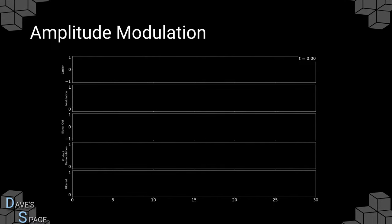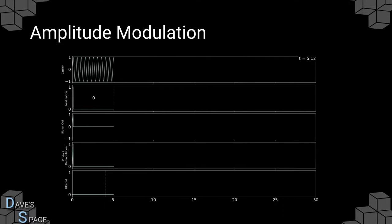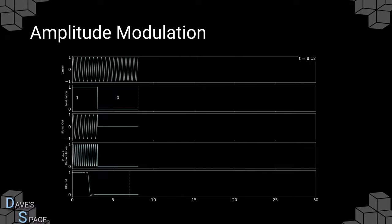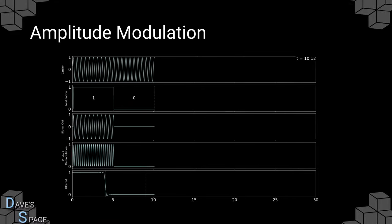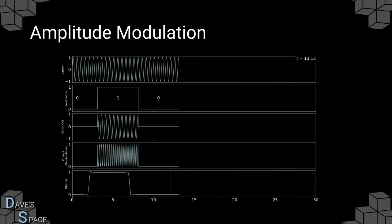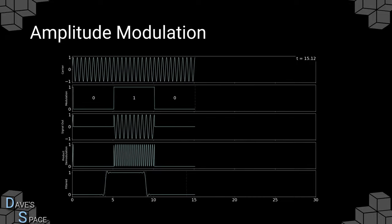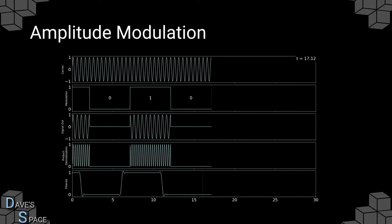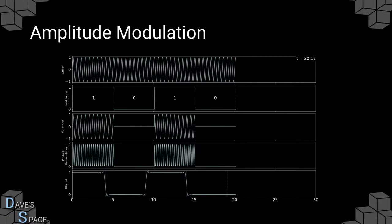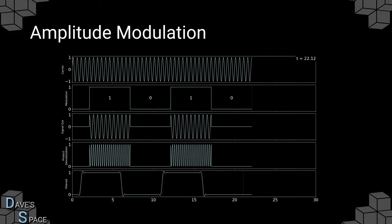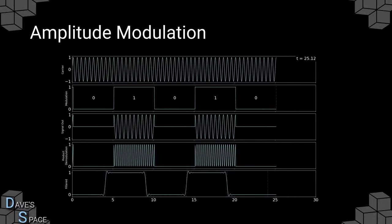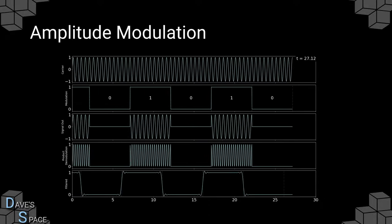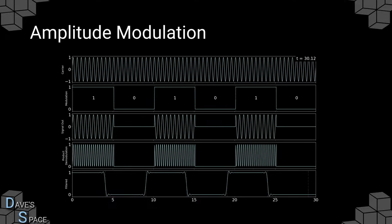To first understand what Quadrature Amplitude Modulation is, we must first look at Amplitude Modulation. If you've seen my previous video, you will have seen this animation. On the top it shows a carrier wave oscillating at a certain frequency. Below this carrier wave is a modulation waveform which, when multiplied together, gives us our signal — the middle plot. We can see that when the data is zero the signal out is zero, and when the data is one the signal out is the carrier wave oscillation, giving us discrete chunks of zeros and ones.